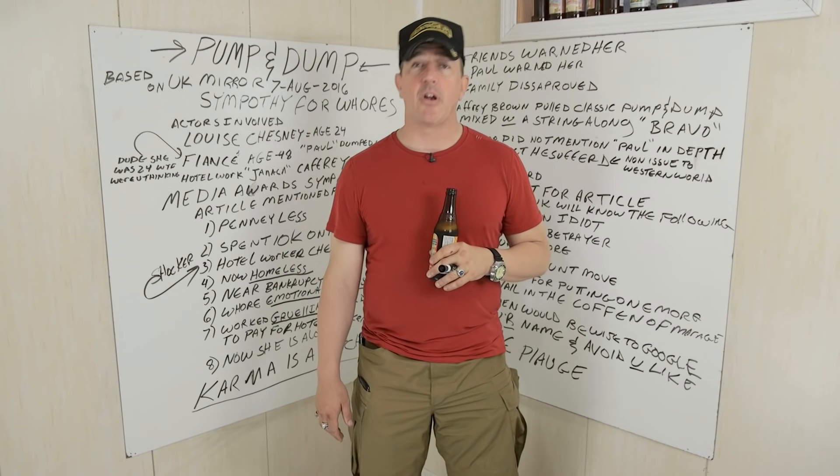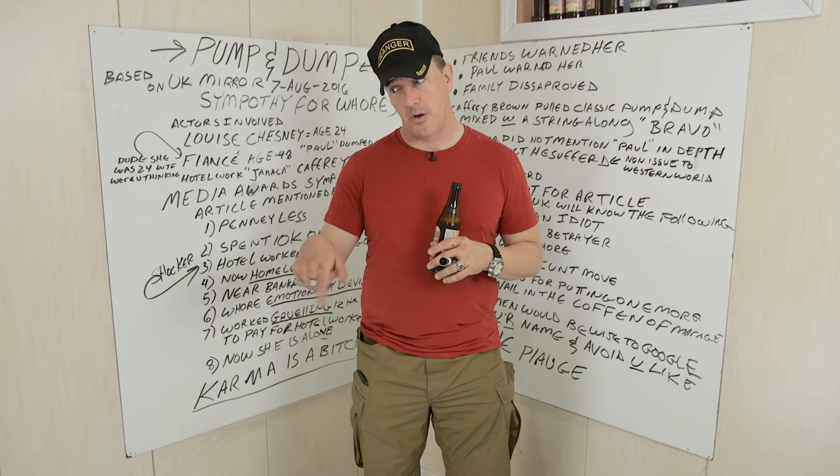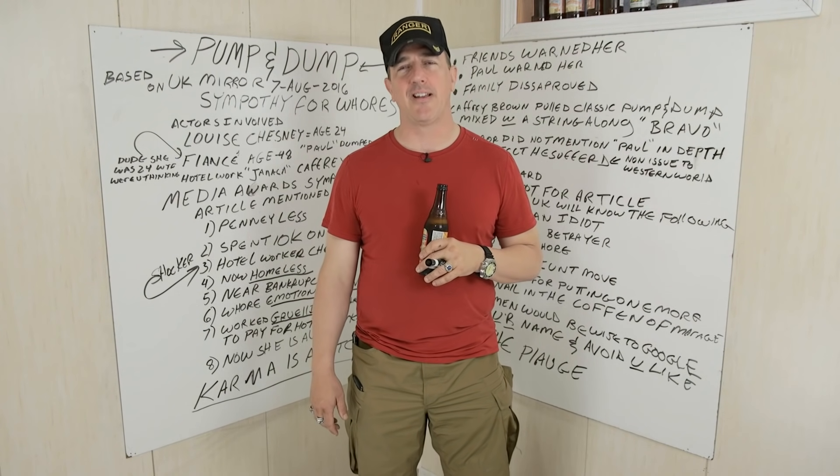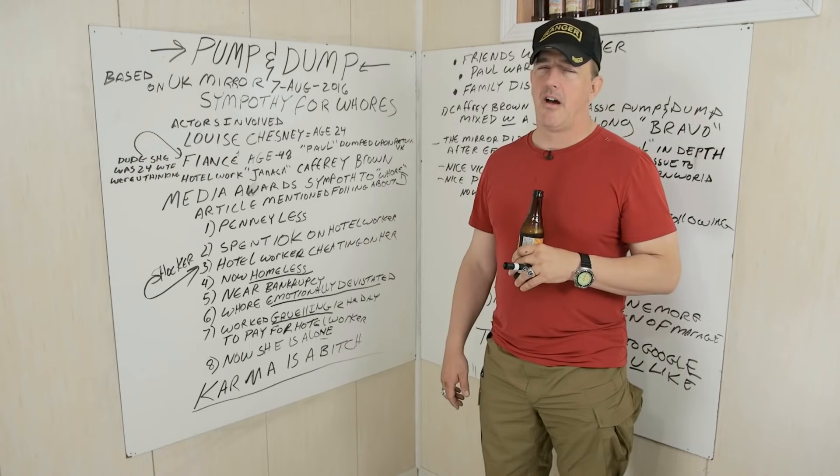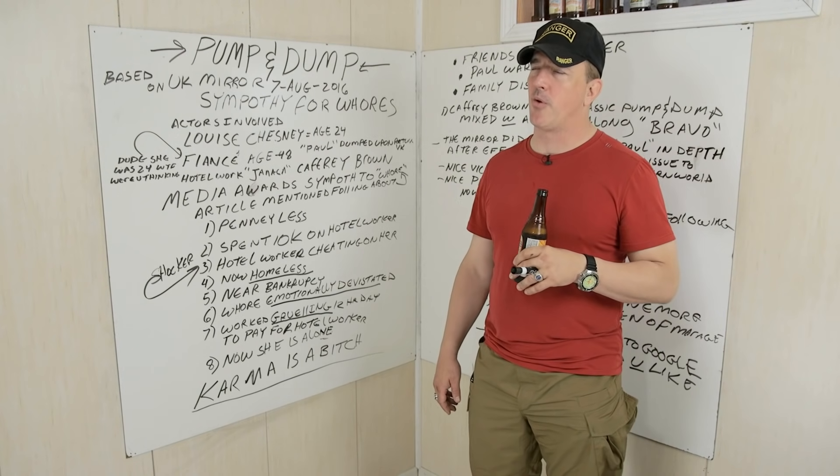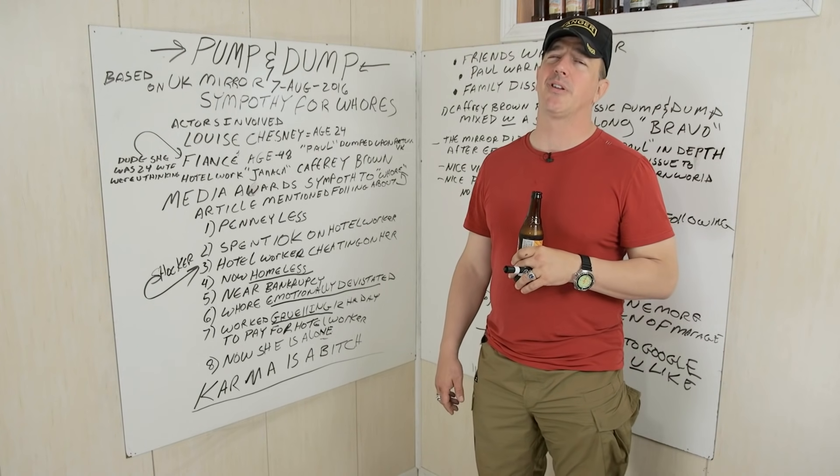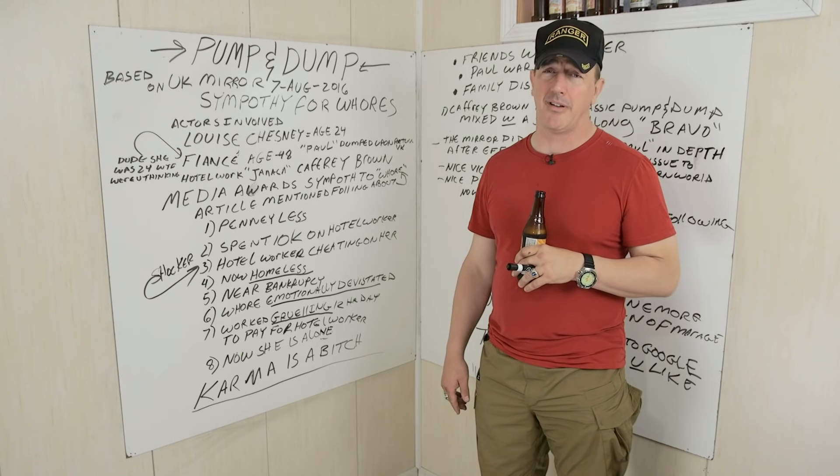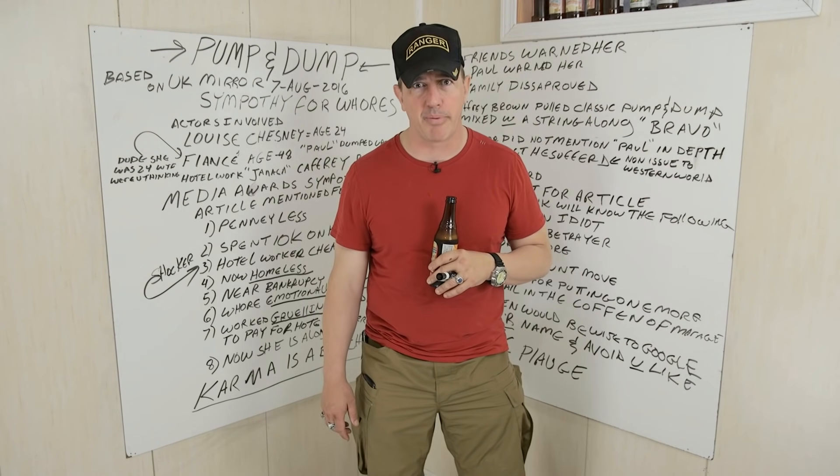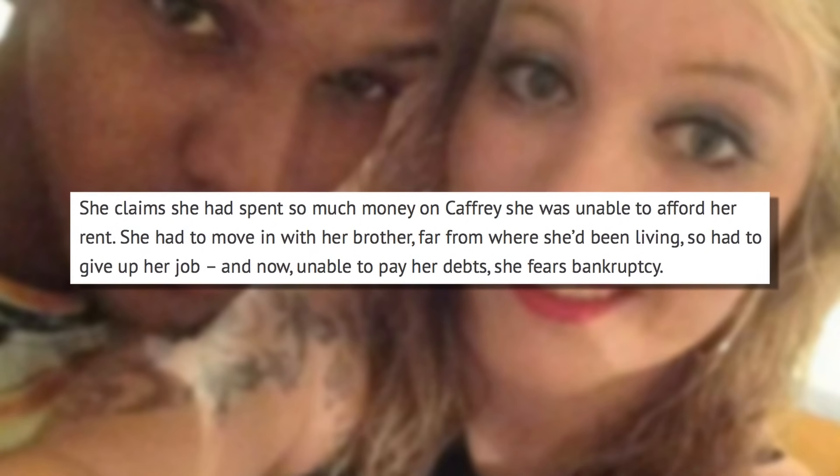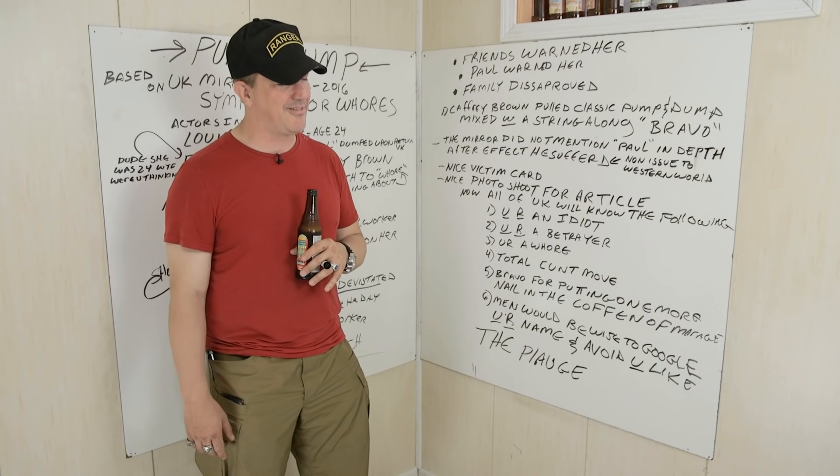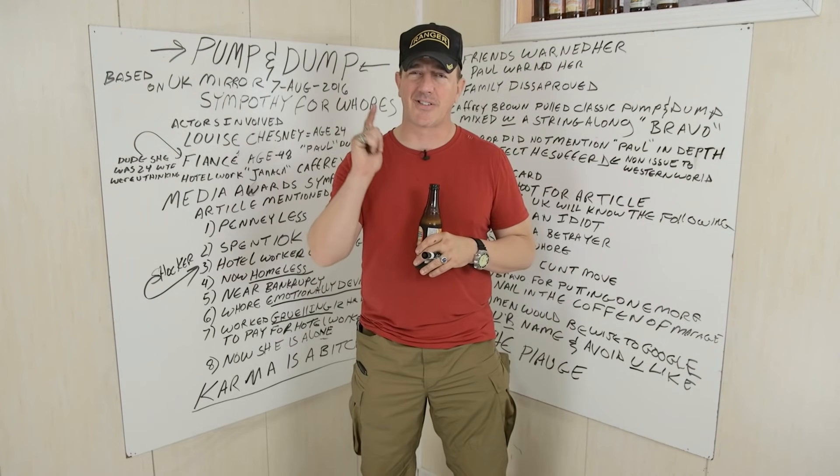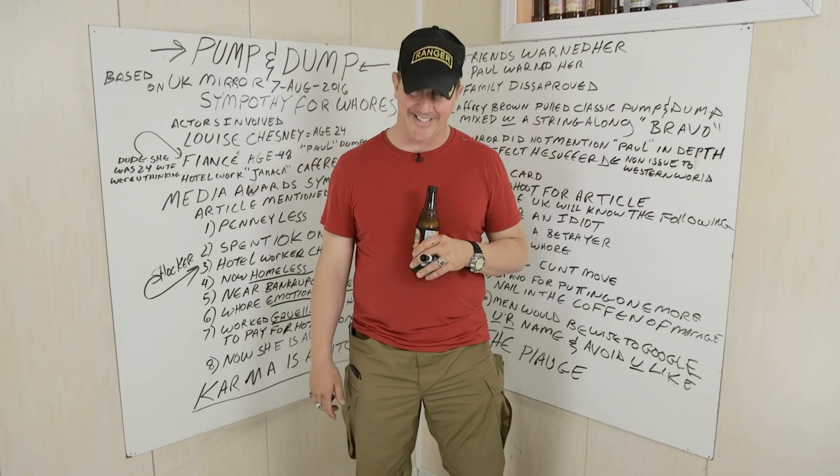So after she spent all her money riding this Jamaican pogo stick all over the place, she's now penniless. And shocker, he cheated on her. All right, woman. Let me explain this to you. You're 24, you should know better. But he pulled a classic pump and dump on you. So what really happened is you're a pump and chump. Now that you've spent all your money and you're on the verge of bankruptcy and homelessness, you want us to feel sorry for you? F*** off. So suck it up and quit your crying.